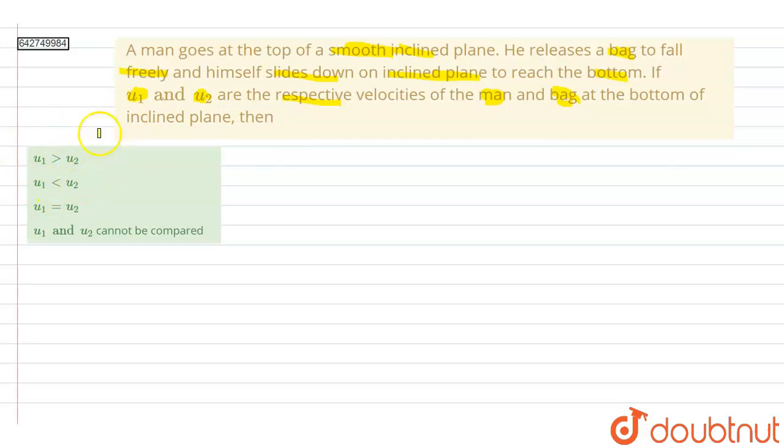That means final velocities of man and the bag. So let us say that this is an inclined plane. This will be the inclined plane, and this is having some angle, some angle of inclination theta.